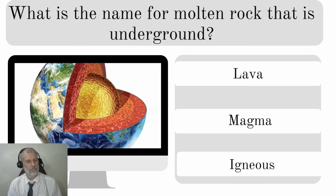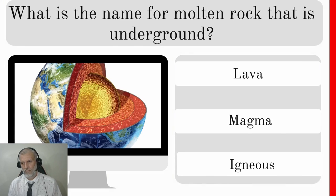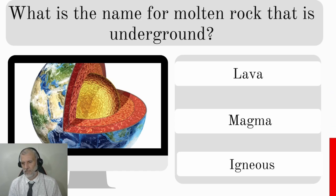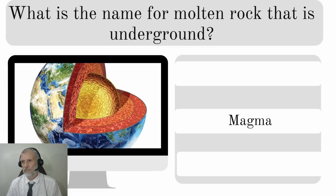What is the name for molten rock that is underground — is it lava, magma, or igneous? Magma. And the correct answer is magma.